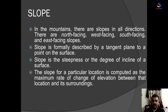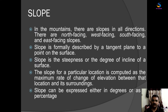In another way, the slope of a particular location is computed as the maximum rate of change of elevation between that location and its surroundings. It means the change in height of the terrain between that particular location and its surroundings is called slope. Slope can be expressed either in degrees or as a percentage.